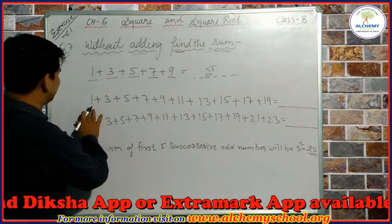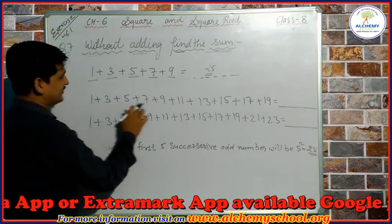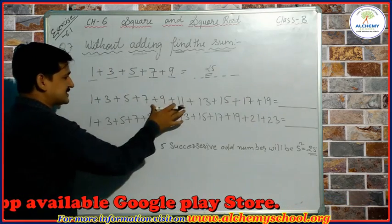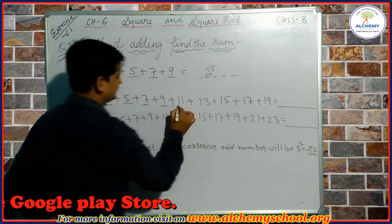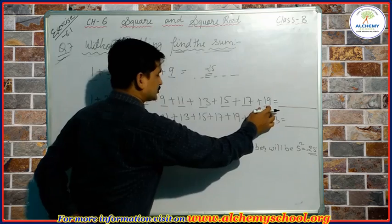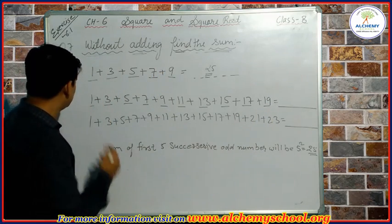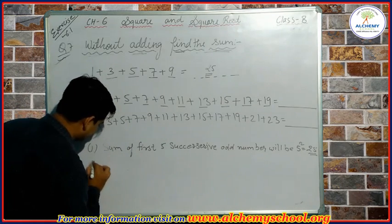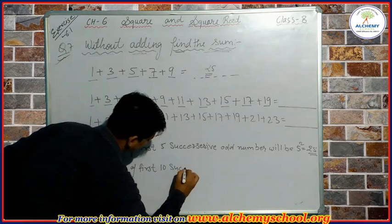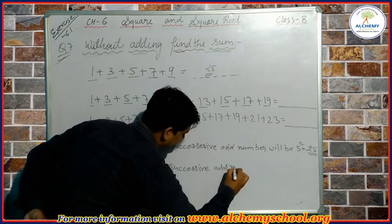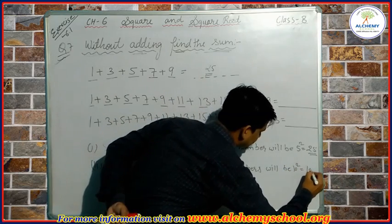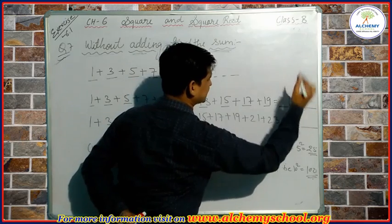In the same way, when we observe the next set of numbers — 1, 3, 5, 7, 9, 11, 13, 15, 17, and 19 — these are also odd numbers. Counting them: 1, 2, 3, 4, 5, 6, 7, 8, 9, 10 — these are the first 10 successive odd numbers. So the sum of the first 10 successive odd numbers will be 10 square, which is equal to 100.